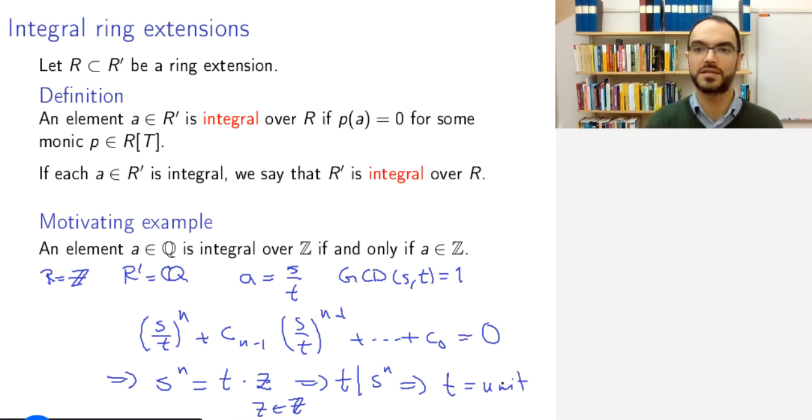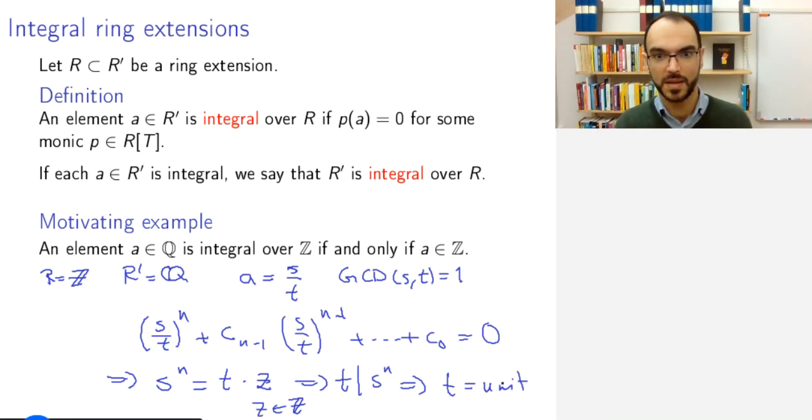But because they are coprime, this means that t is a unit. So in the case of the integers, it's plus or minus 1. But actually this proof works for any unique factorization domain. And what this tells us is that no non-integer rational number can be a root of a monic integer polynomial. This is a fact that you perhaps know from earlier courses in algebra.